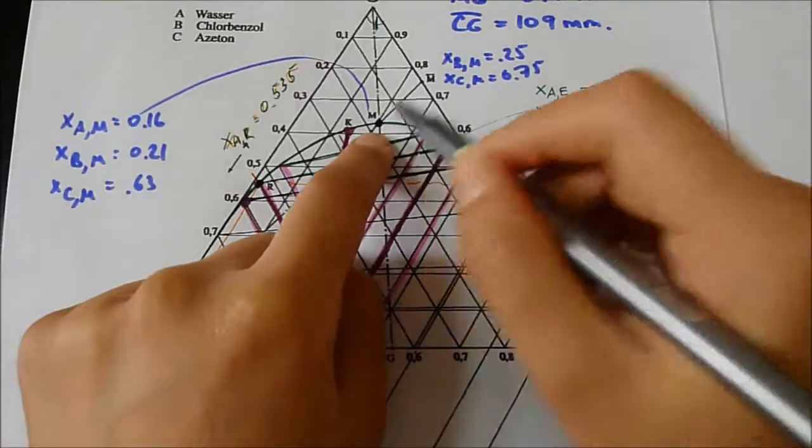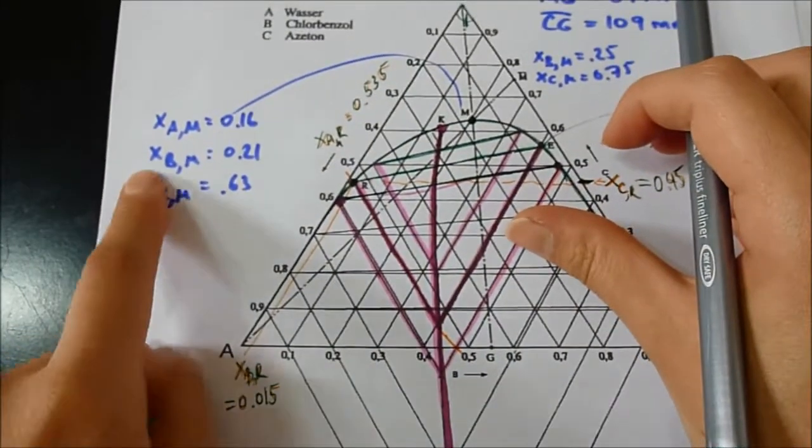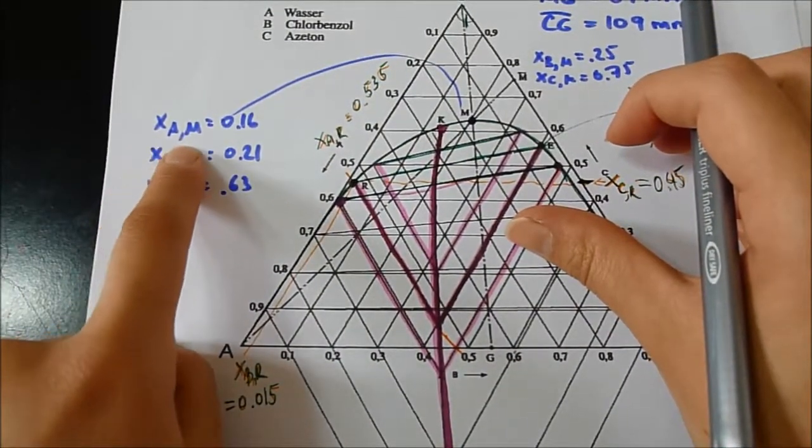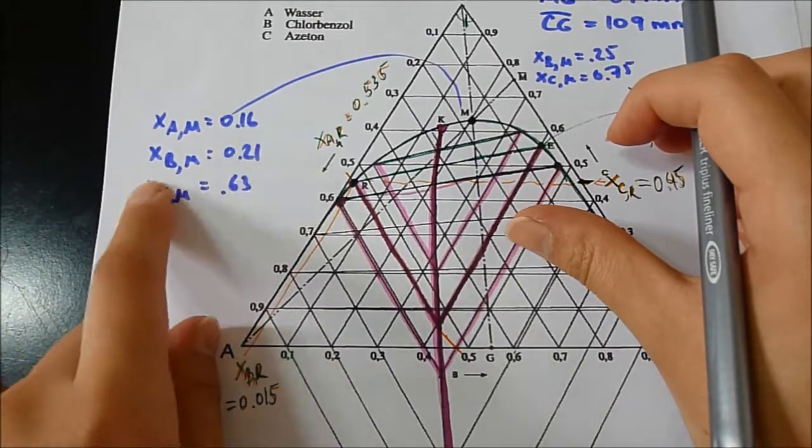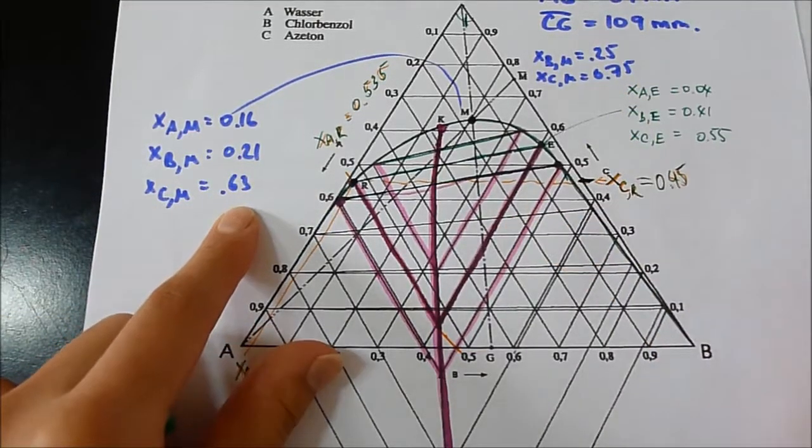From this point M, we also can find the mole fraction. It turns out XAM is equal to 0.16, XBM 0.21, and XCM 0.63.